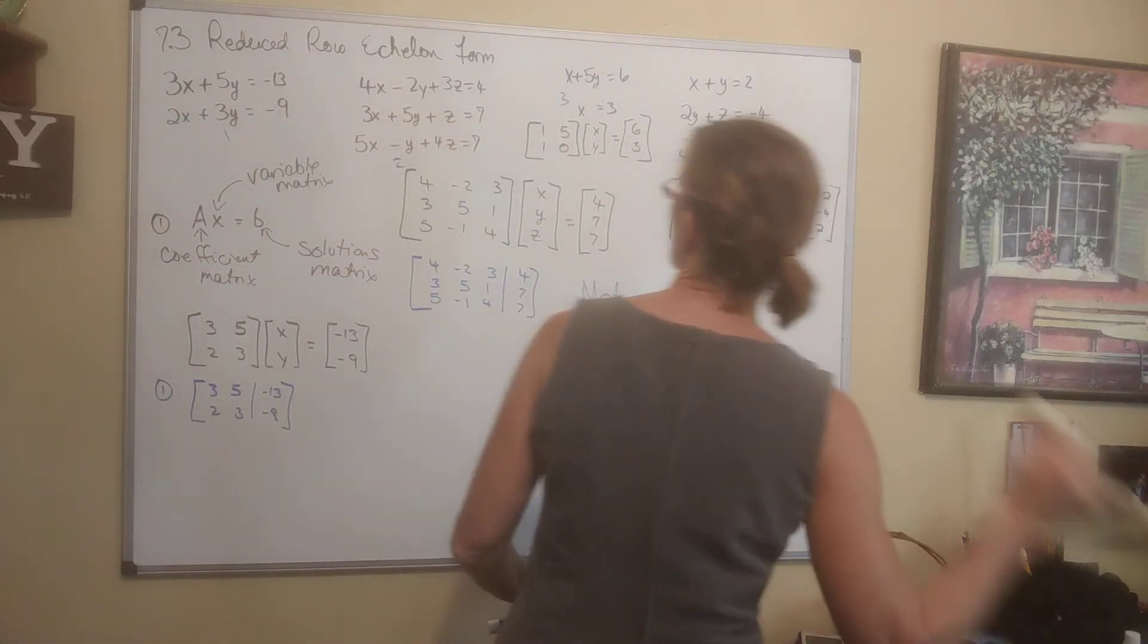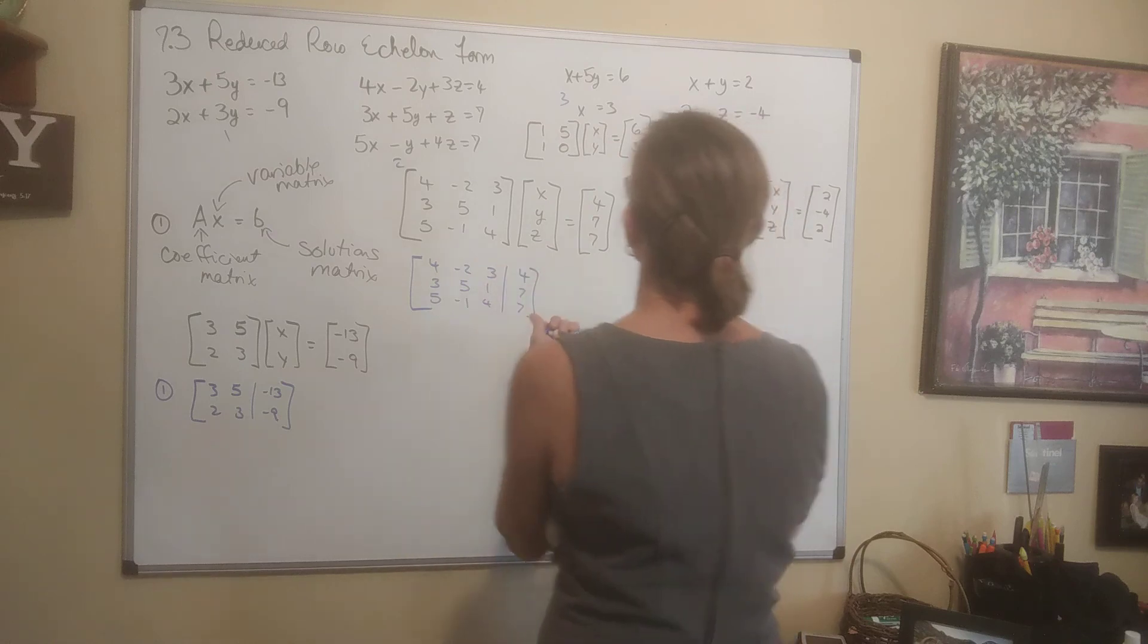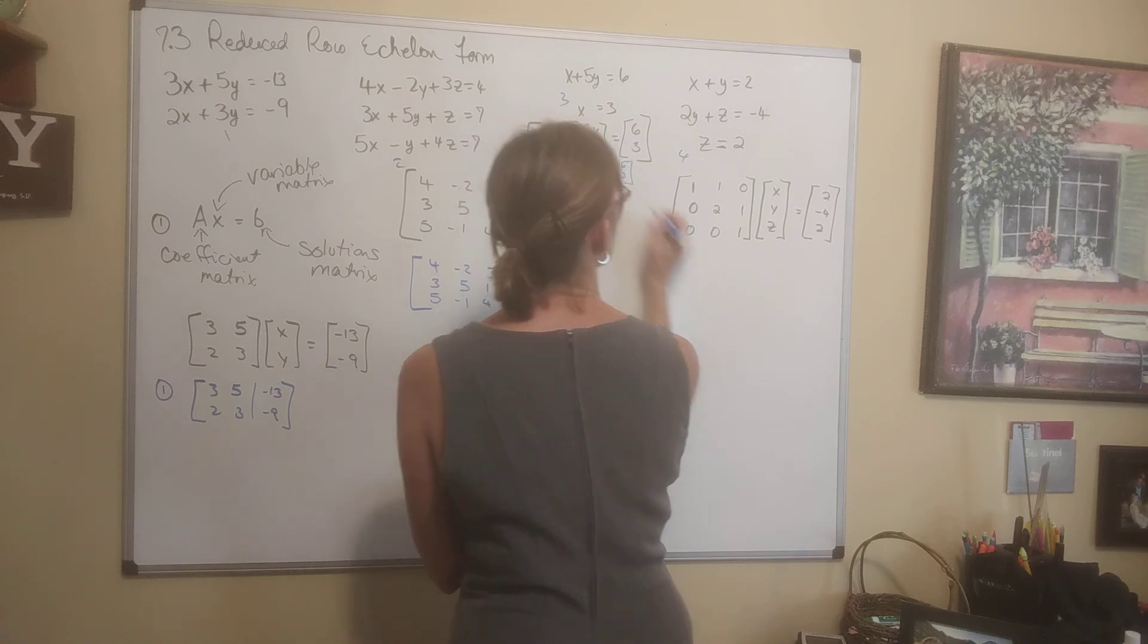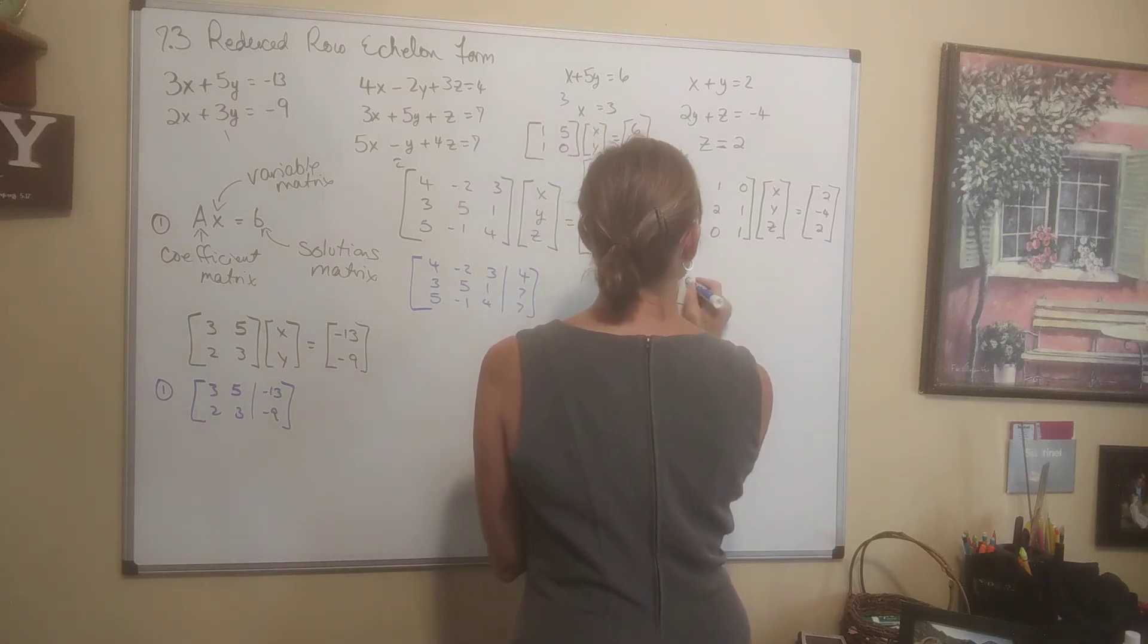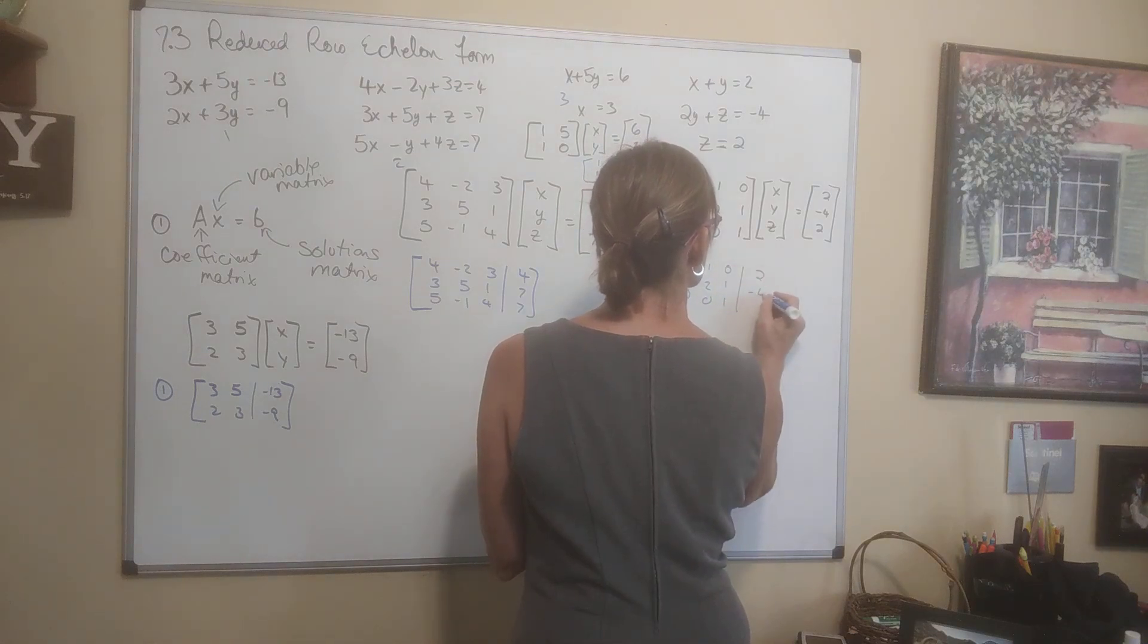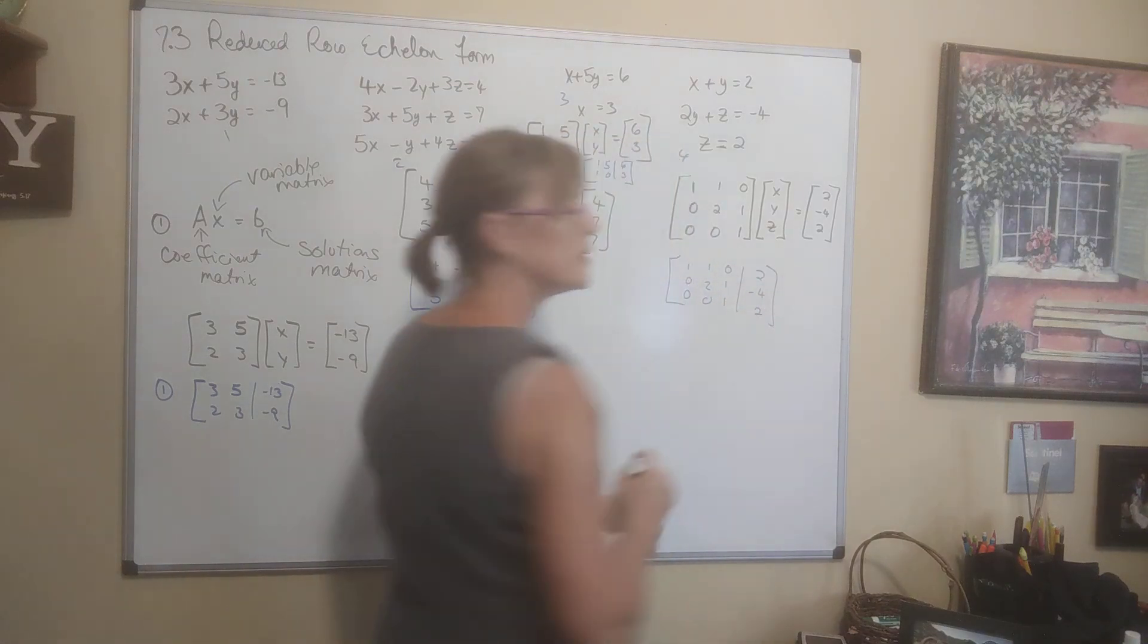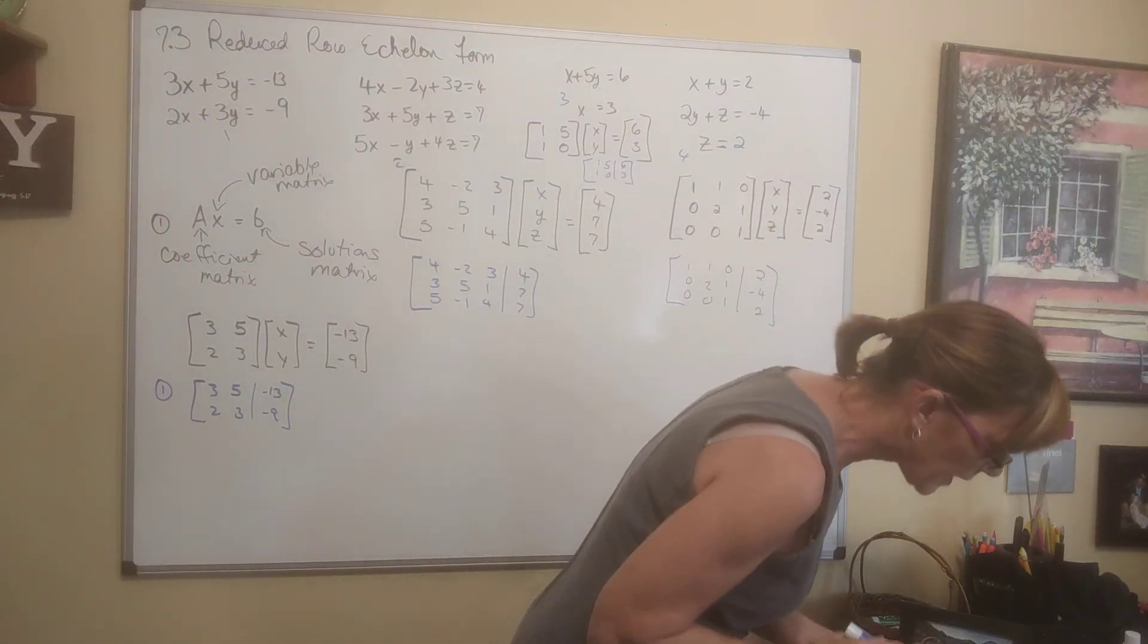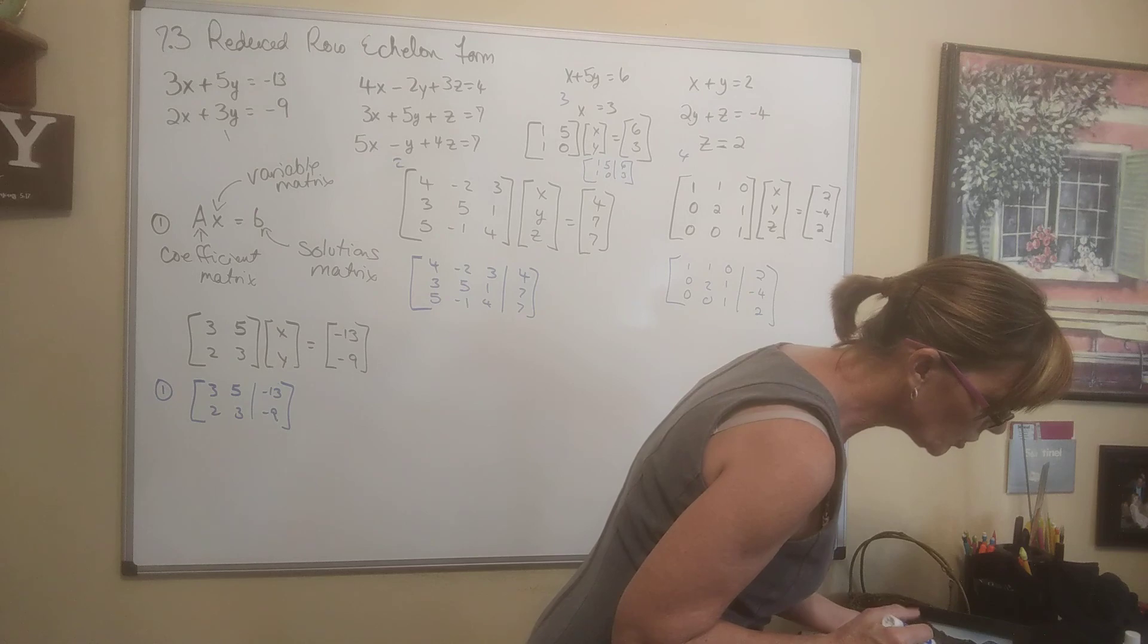So this one would simply be 1, 1, 5, 0, 6, 3. This one would simply be 1, 0, 0, 1, 2, 0, 0, 1, 1, 2, negative 4, 2. Augmented matrices, just like that.